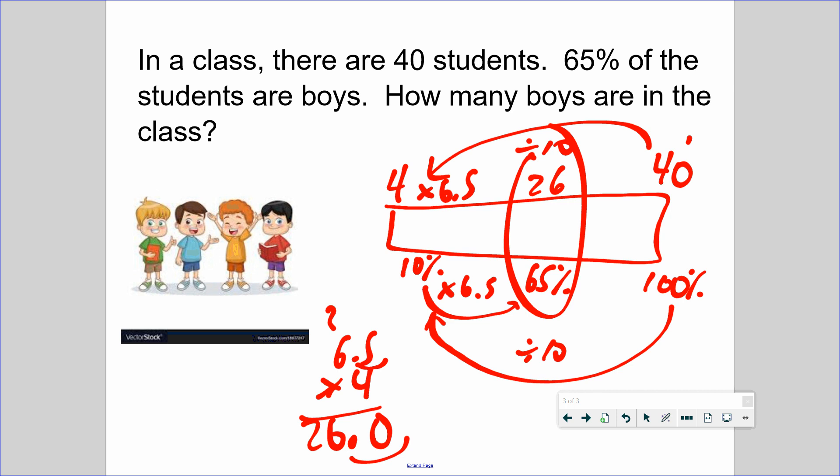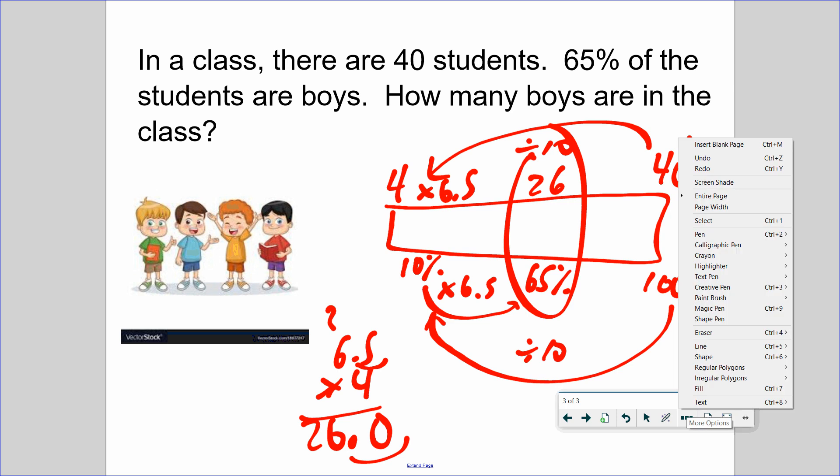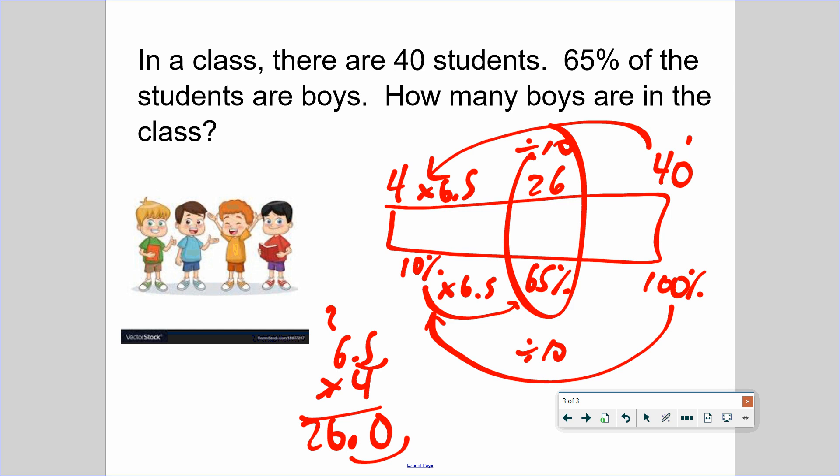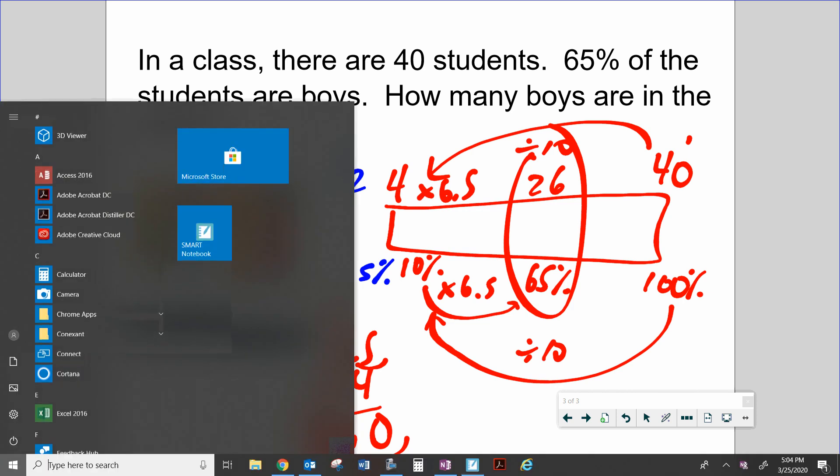Some students may ask, 'Can I break it down to 5%?' Let me show you. Some students may break it down this way: from 10% to 5% by dividing by 20. So 40 divided by 20 is 2. And then how many 5's go into 65%? Times 13. 2 times 13 is 26. Hopefully this is a review of benchmark percent.